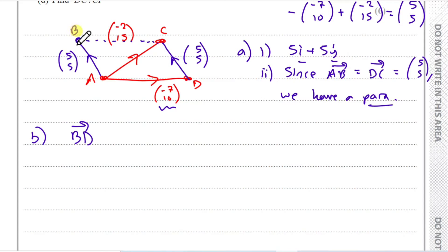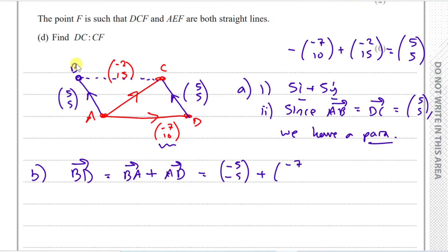If we look at B, we can go from B to A, and then A to D. So this equals BA plus AD. And that's going to be, because you're going through the arrow, it'll be the negative version, so it'll be minus 5, minus 5, plus AD, which is minus 7, 10.